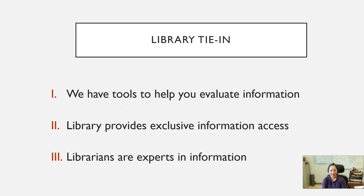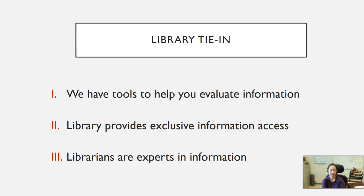How does that relate to the library? Three major things. We have the tools to help you evaluate information — links out to fact-checking sites as well as videos and guides on how to shape your filter bubble, basically who exists in your sphere of information. The library also provides exclusive information access. Every university buys access to the most relevant, pressing research and scholarship, and we have to pay for that. The average person can't just access that information, so you are now part of a group of people that has access that others don't. How do you use that responsibly? We'll look at that later.